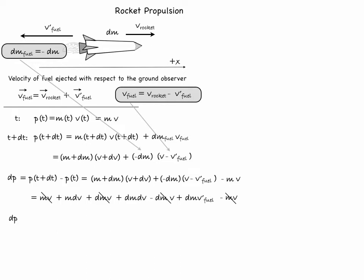So for the change of the momentum we get m dv plus dm dv plus dm v'_fuel. In the limit of infinitely small time interval dt we can actually neglect the middle term dm dv as it is the product of two infinitely small quantities. So finally the change in the momentum during the interval dt can be written as m dv plus dm v'_fuel.